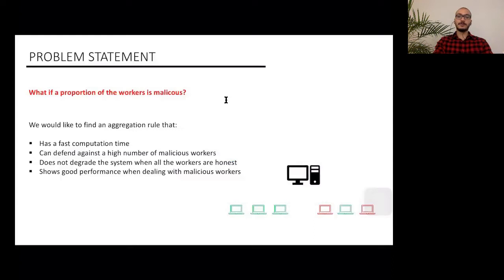Here are some of the properties that we want from an aggregation rule. First, the training itself is already taking a huge amount of time, so the defense mechanism should be fast, otherwise the training will be a daunting task. It should also defend against a high number of malicious workers, and it should be noted that the maximum number of Byzantine workers that can be tolerated is half, because if more than half are malicious, it will be impossible to distinguish between the good and the bad.